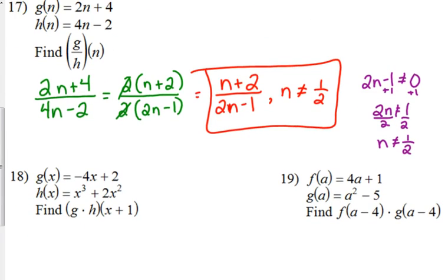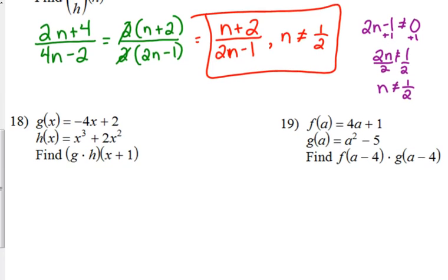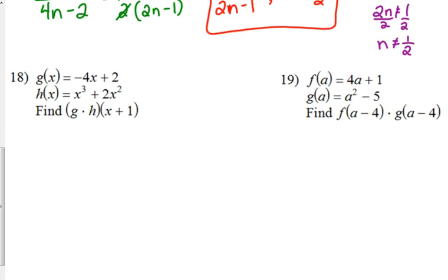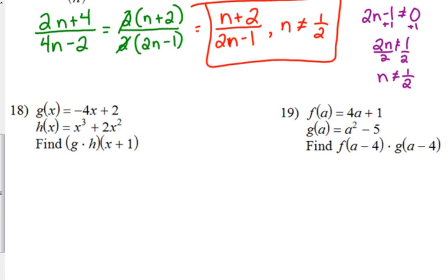Let's do like we've done with the other problems and look at combining this with plugging in an expression. Number 18. Yes, we're multiplying g times h, but then we're plugging in x plus 1. We're multiplying g times h and we're plugging in x plus 1.